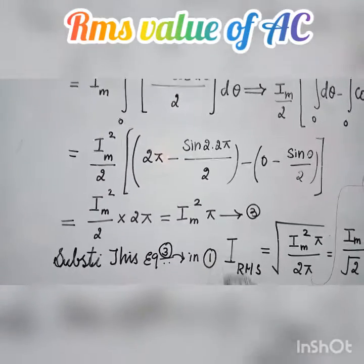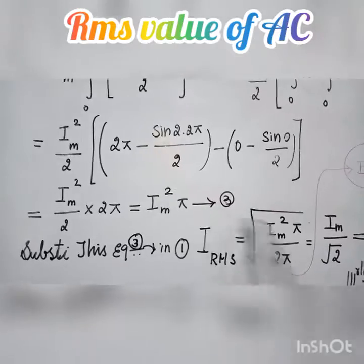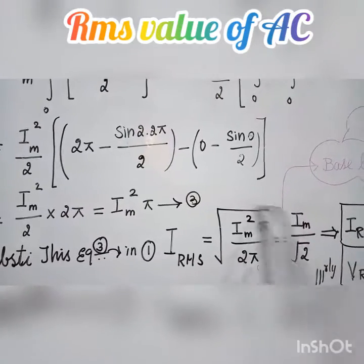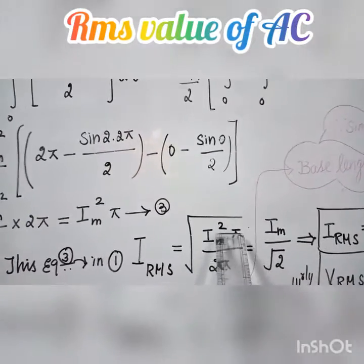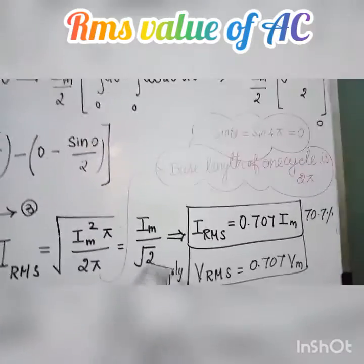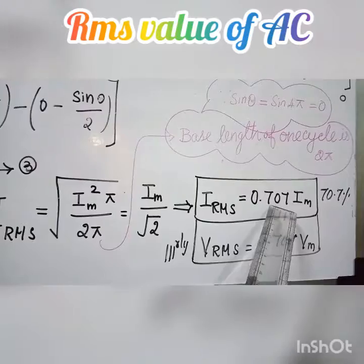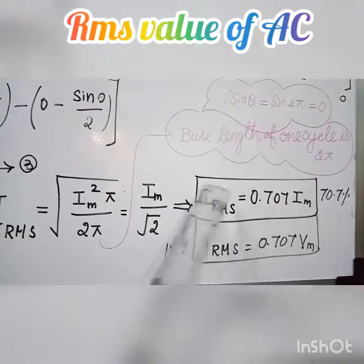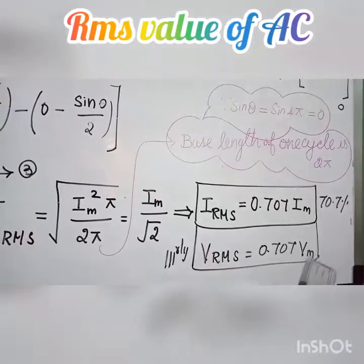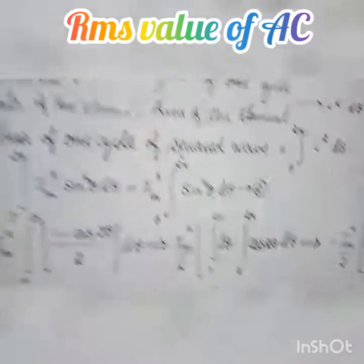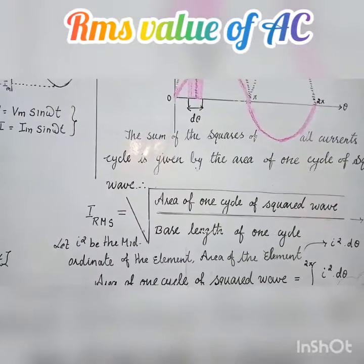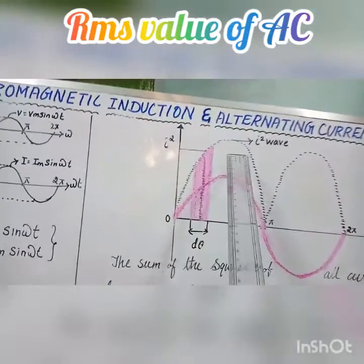Here, the base length of one cycle is 2π. So I_RMS = √(I_m² π / 2π). The π cancels, giving I_RMS = I_m / √2. Since √2 = 1.414, the root of 2 gives 0.707 × I_m. Therefore, I_RMS = 0.707 I_m, meaning the RMS value of a symmetrical sinusoidal current is 70.7% of the peak value of the sine waveform.